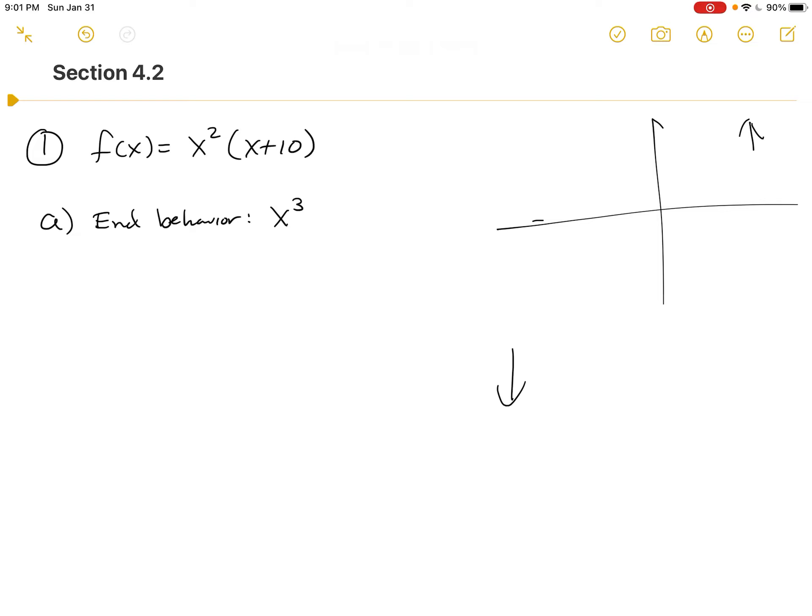So it teaches us a lot in that process. So end behavior. B, we want to know what the x-intercepts are. Well, the x-intercepts are the zeros. And in this case, that's zero and negative 10.